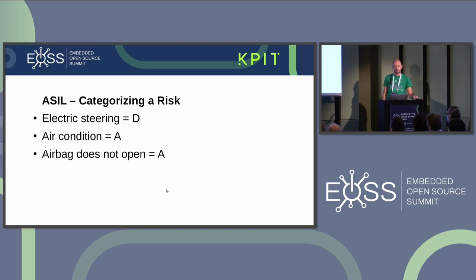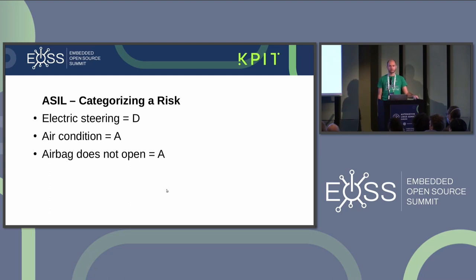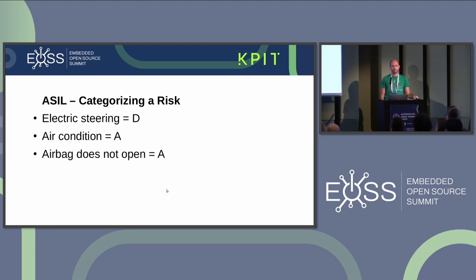Let me give some examples. Take the electric steering. The severity is very high because if it does not work as expected, you might cause a crash, and if you are driving fast, the crash might be fatal. The exposure is also very high because the electric steering is needed permanently while driving. And the controllability is low because the electric motor is usually stronger than your arms — so unless you are a bodybuilder, you have no chance to control the situation. Because of high severity, high exposure, and low controllability, electric steering has the highest possible ASIL level: ASIL D.